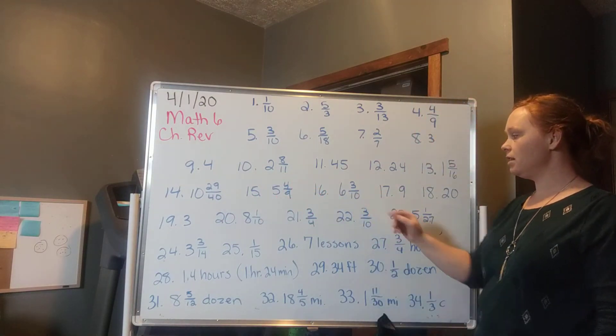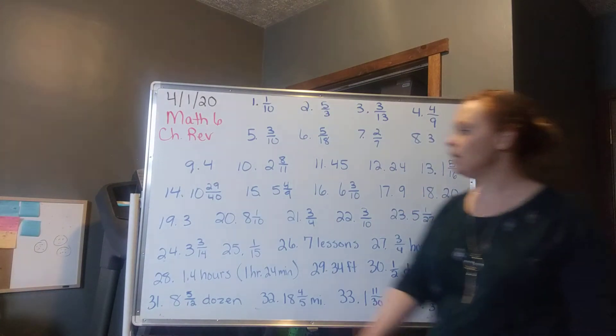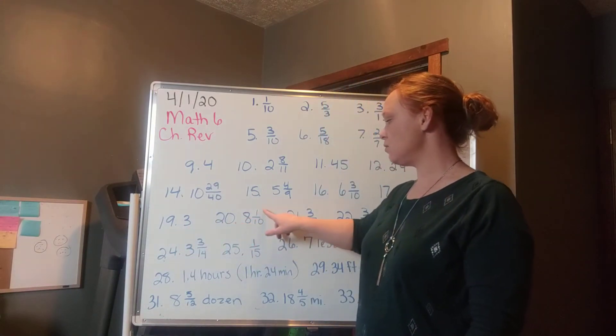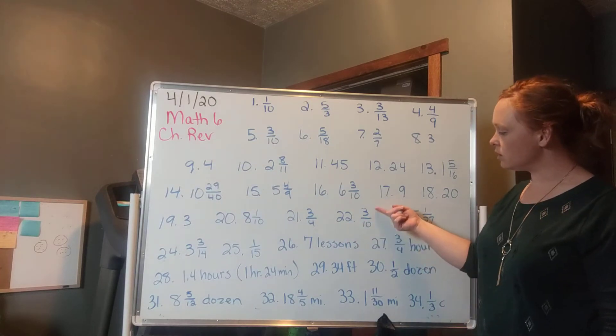Number 16 is 6 and 3 tenths. Number 17 is 9. Number 18 is 20. Number 19 is 3. Number 20 is 8 and 1 tenths. Number 21 is 3 fourths. Number 22 is 3 tenths.